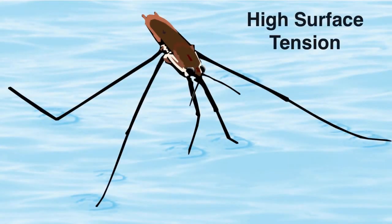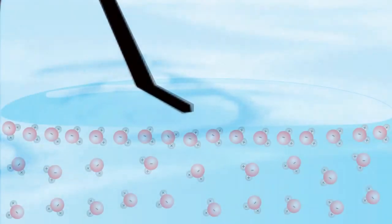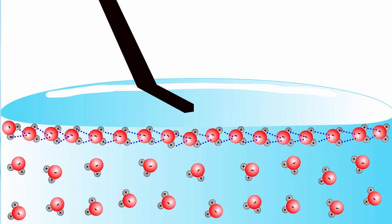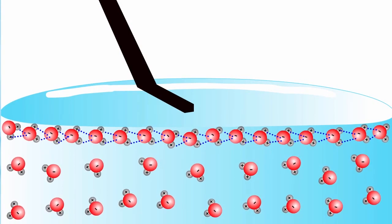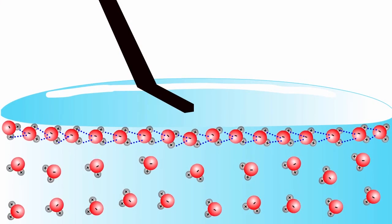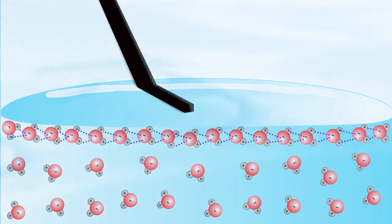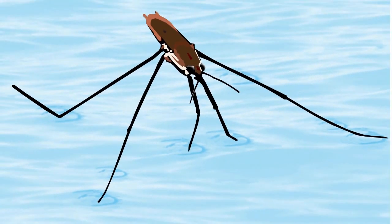Water also has a high level of surface tension. Because water molecules at the surface are more strongly attracted to each other than to the air above, water molecules cling tightly to each other. The surface tension of water explains why it beads up on waxy surfaces, and why water-striding insects are able to walk on the surface of water.